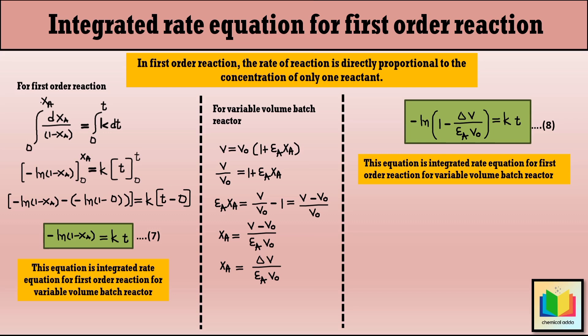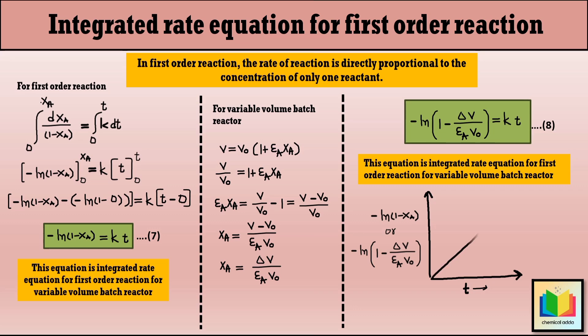Let's conclude this topic. For a variable volume batch reactor, there are two forms of the integrated rate equation for first-order reactions. If we plot minus ln(1 − X_A) or minus ln(1 − ΔV/(ε_A·V_0)) versus T, we will get a straight line with slope equal to K.